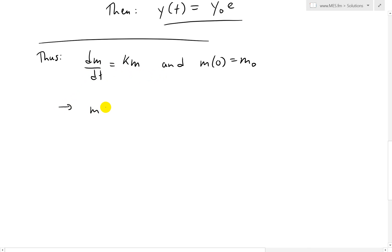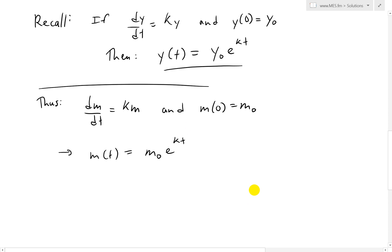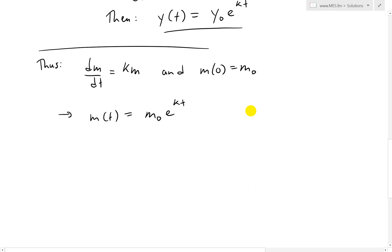Then we have the solution m(t) equals m₀ times e^(Kt), or initial mass times e to the Kt. Exactly the same formula here - we're just switching the y with the m.